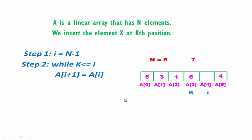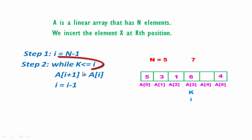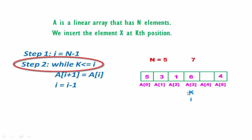Next we decrement the value of i by 1 — that is i = i minus 1. For this example, after decrement the value of i will be 3. Then again we check the condition k less than or equal to i — yes, it is true.